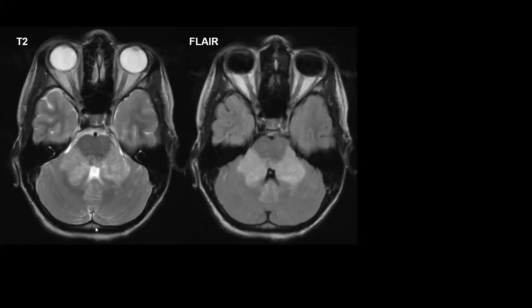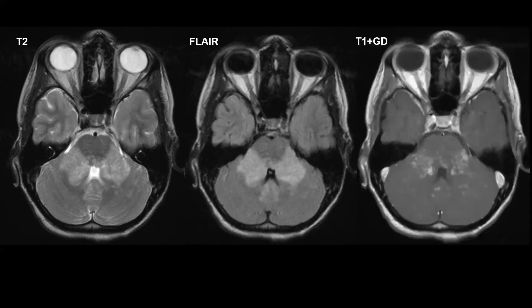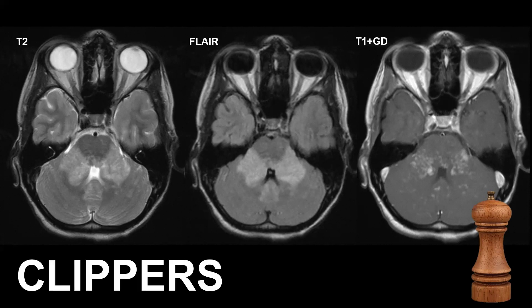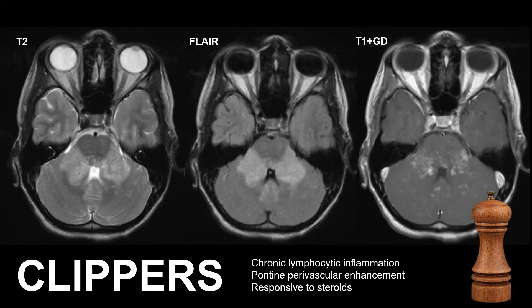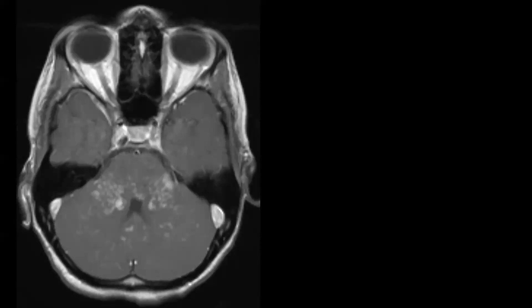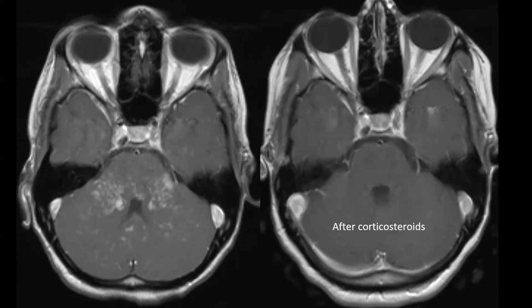On T1-weighted images with gadolinium we see many small enhancing dots — it looks as if someone peppered the brainstem and cerebellum, especially the middle cerebellar peduncles. This pattern, the peppered pons and peppered cerebellum, should make you think CLIPPERS — a chronic lymphocytic inflammatory disorder with dot-like perivascular enhancement. It responds extremely well to steroids: this is the image before steroids and this is a couple of days after initiating steroid treatment.